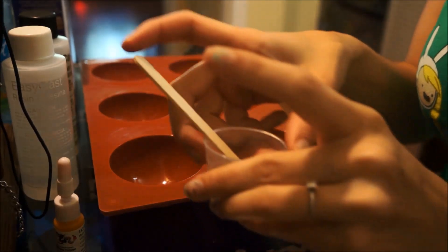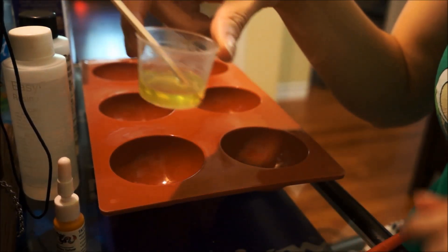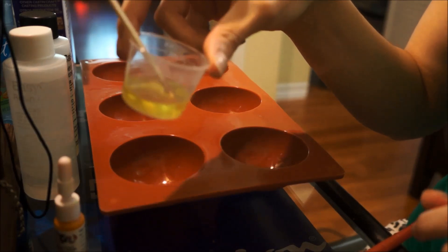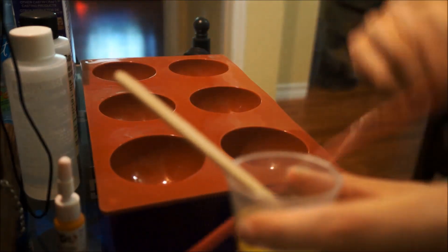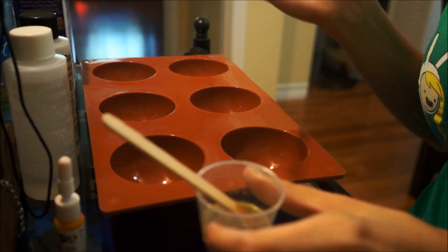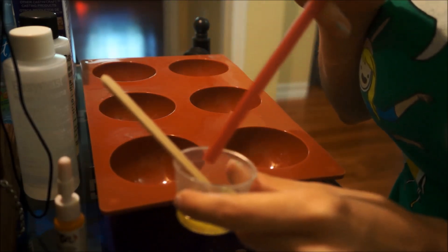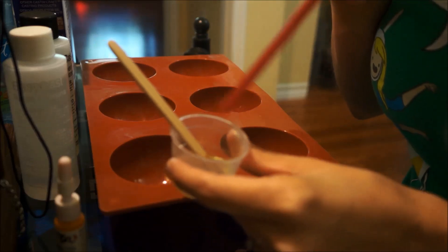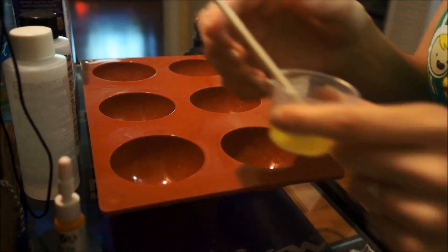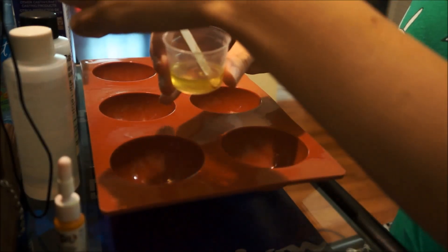Okay, so once the color is fully mixed into your resin and made this kind of yellow color, you're going to take a straw and blow out the bubbles and then just slowly pour this into your mold.